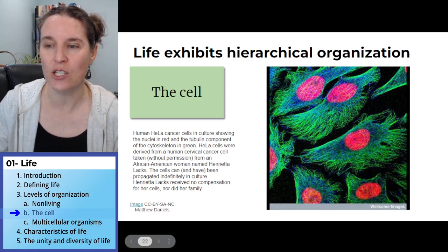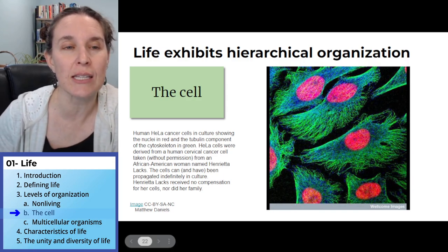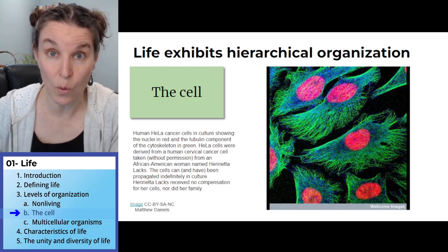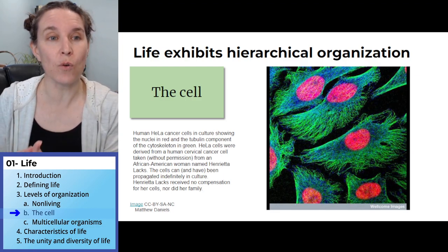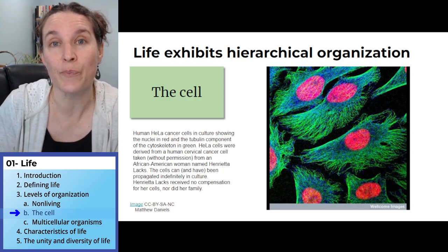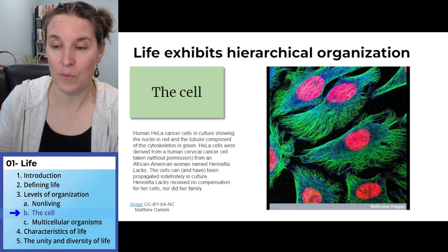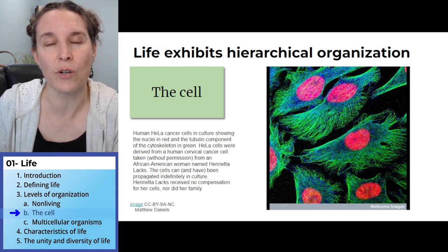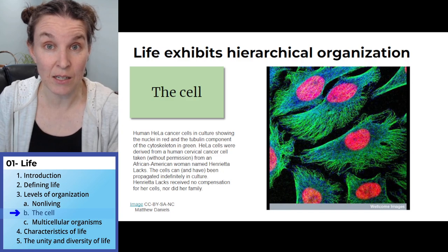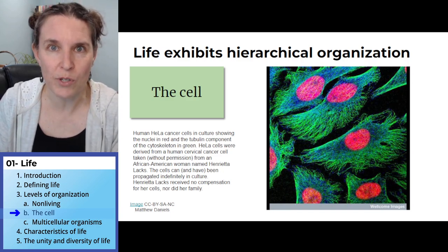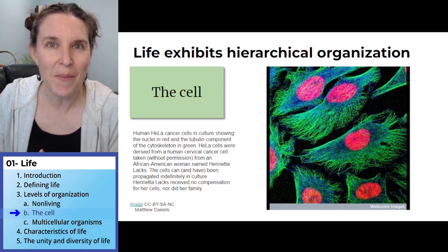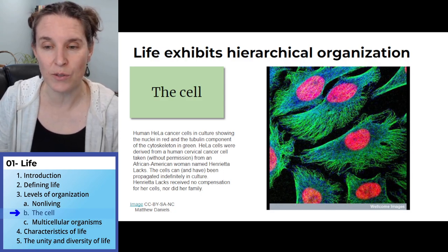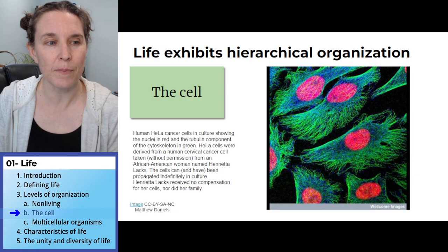I want to draw your attention to the cells that are actually in this picture. These are cells called HeLa cells, and they were actually taken from a woman who was seeking medical care for cervical cancer. She died from cervical cancer, and in the process of attempting to get treatment, her cells were taken, grown, and reproduced — made more of — and they became a very common cell line in biological sciences.